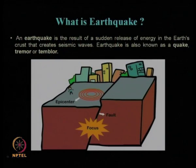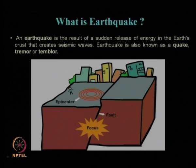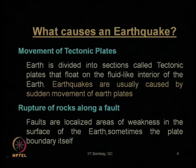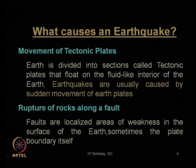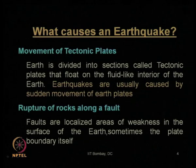In this engineering seismology, we have first studied what is an earthquake and how it gets generated through sudden release of energy in the earth's crust, which creates finally the seismic waves. What are the major causes of an earthquake? We have seen there can be two major reasons: one is movement of tectonic plates and another is rupture of rocks along a fault.